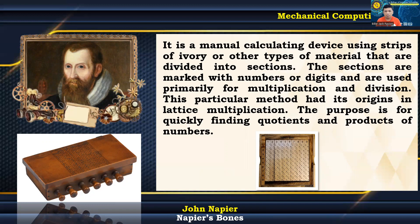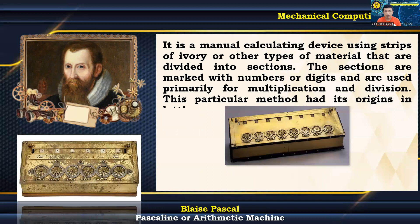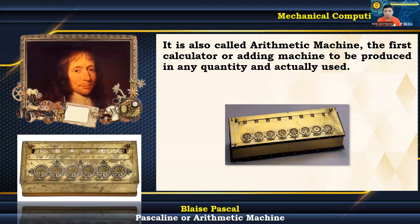Napier's bones is a manually operated calculator used to compute number products and quotients. It is also called an arithmetic machine — the first calculator or adding machine to be produced. It only had the ability to add and subtract, and numbers were entered by turning its dials.